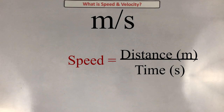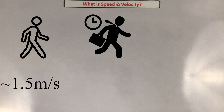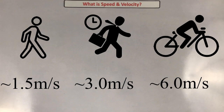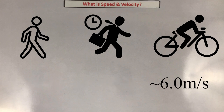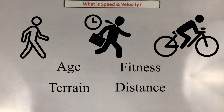Here are some typical speeds you should be able to recall for your exams: walking is roughly 1.5 meters per second, running is roughly 3 meters per second, and cycling is roughly 6 meters per second. These speeds will depend on several factors like age, terrain, fitness level, and the distance you have to travel.